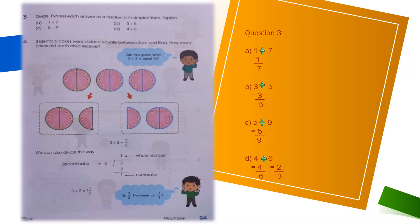In question 3, we have to express each answer as a fraction in its simplest form. Starting with part A, we have 1 divided by 7: 1 comes in the numerator and 7 comes in the denominator, and these both numbers are not further divisible by any single number, so this is our final answer. The same is the situation with part B, where 3 comes in the numerator and 5 comes in the denominator, and for part C, 5 comes in the numerator and 9 comes in the denominator — they are not divisible by any single number, so that is the final answer.